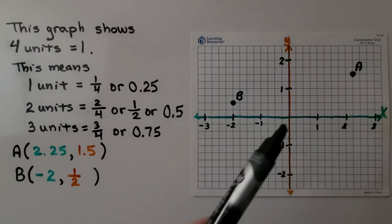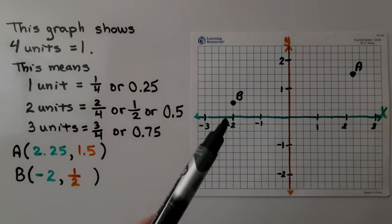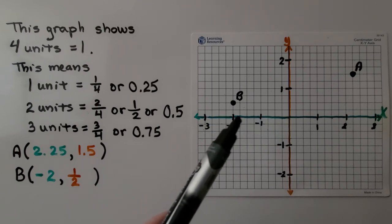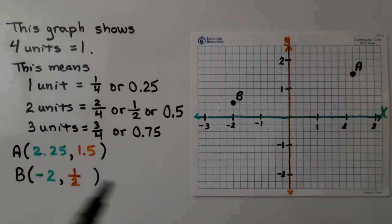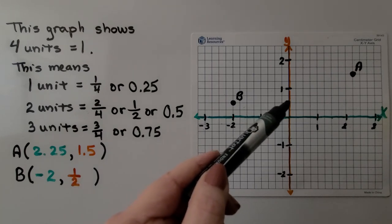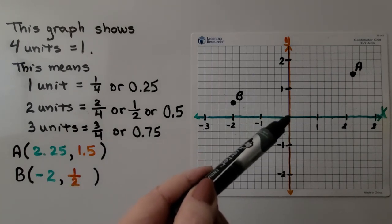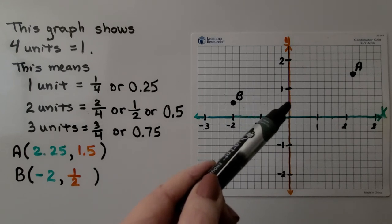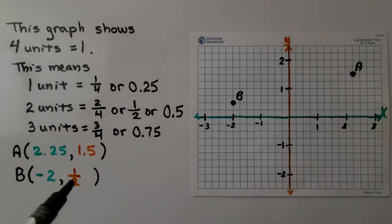For B, we look and see that it's at negative 2 for the x value. And it's right in the middle of the origin 0 and 1. That's half way. That's half. So, we can write the y coordinate as half.